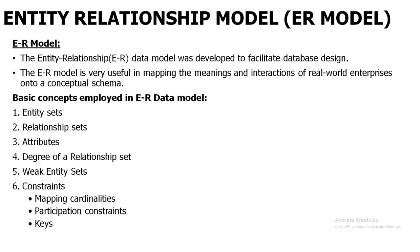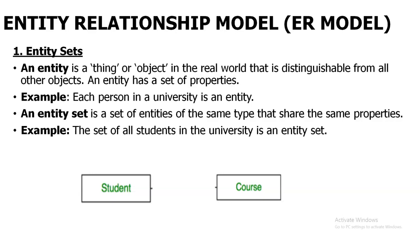The basic things in the ER model are: entity set, relationship set, and attribute. First of all, entity set. An entity is an object in the real world. For example, consider a college database. In the college database, each student plays an entity role — each student is an entity. But entity set means all entities with the same attributes or same properties combined together form an entity set. One student is called an entity.